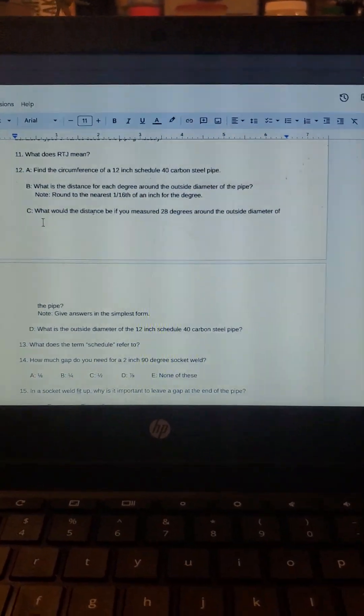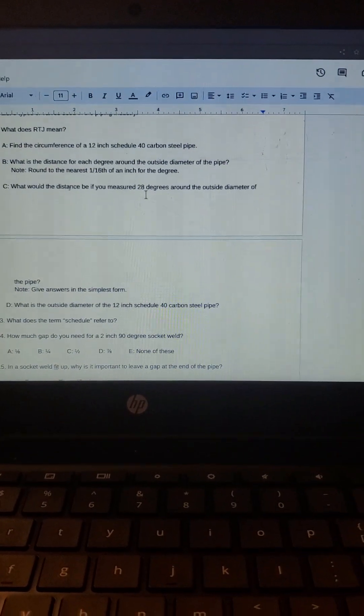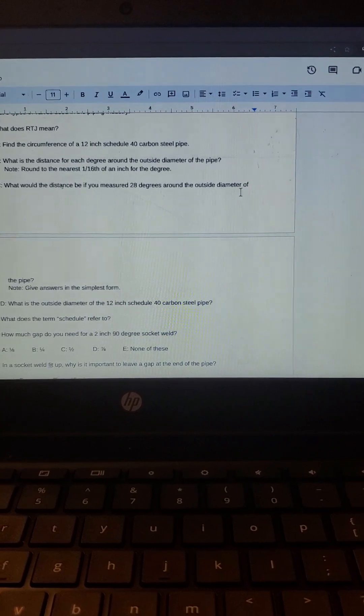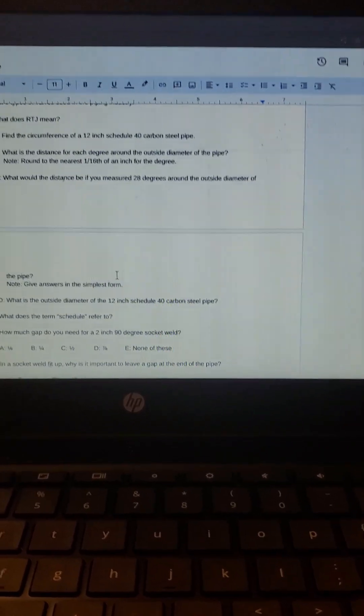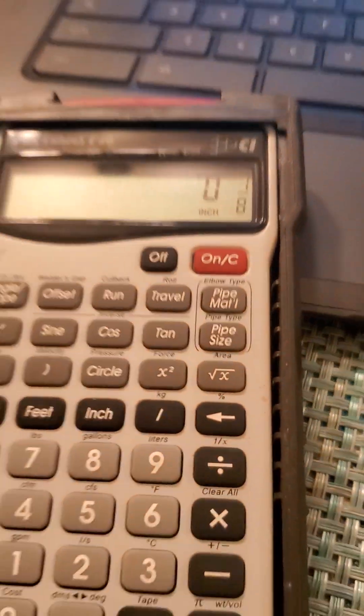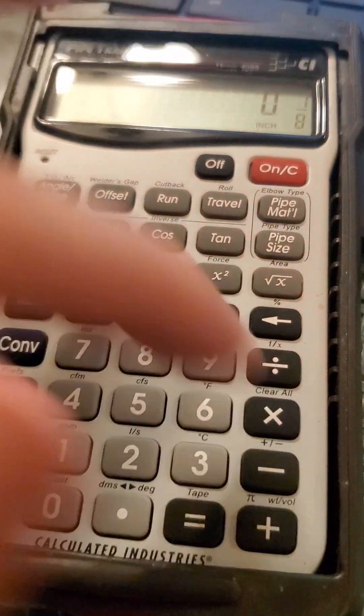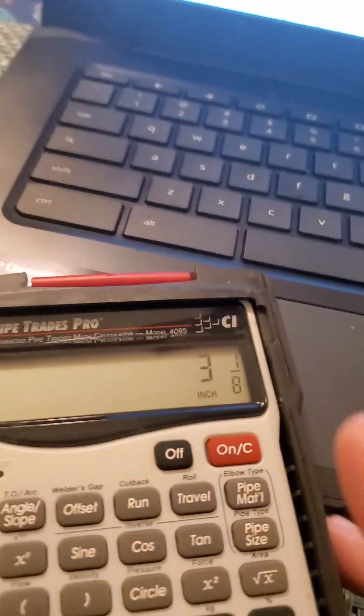What would the distance be if you measure 28 degrees around the outside diameter of the pipe? It says to give examples in simplest form. So we go back here, so an eighth times 28 degrees, so it'd be three and an eighth. So the answer to C is three and one eighth.